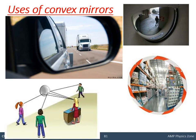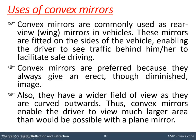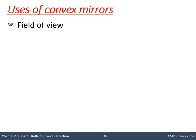Here is an example: a lady standing at one position can see multiple people — this person, this person, and this person — all three, because there is a convex mirror with a large field of view. The person standing at various positions can also be seen. These are the uses of a convex mirror. Now let's understand what a wider field of view means by comparing a plane mirror and a convex mirror.